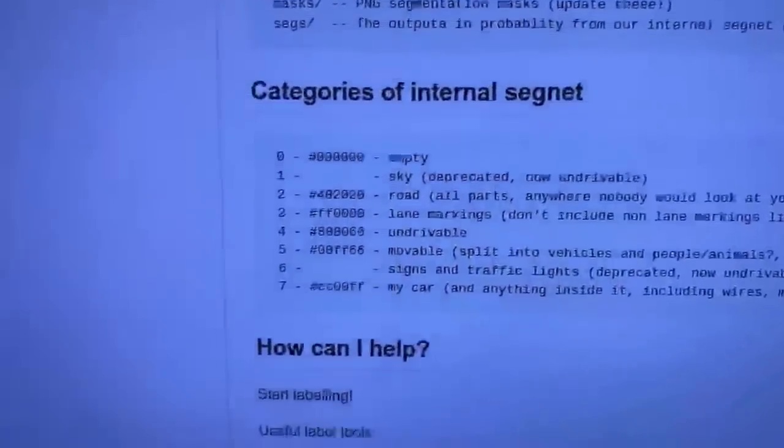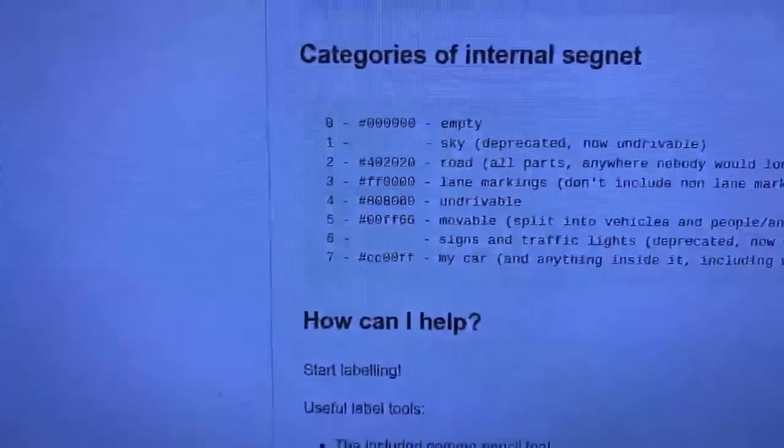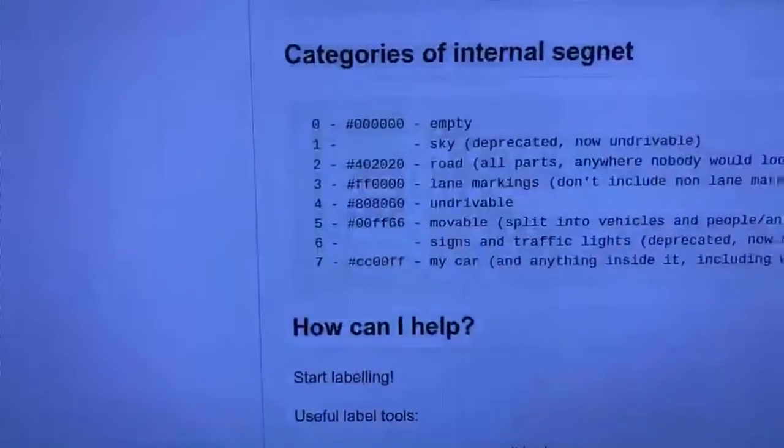There's a saying in machine learning: garbage in, garbage out. But you can also say quality in, quality out. The color standard is listed in the readme — we talk about what the categories are there. The categories are simple: road, lane markings, undrivable, movable, and my car. Road is anywhere nobody would look at you funny for driving. Undrivable is anything you can't drive on like sky or a concrete barrier. Movable is people and vehicles. Signs are also undrivable.